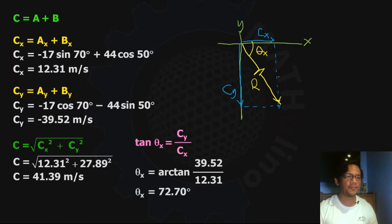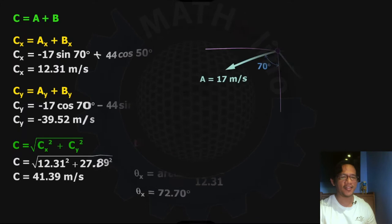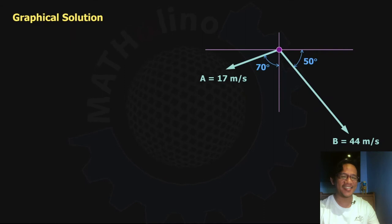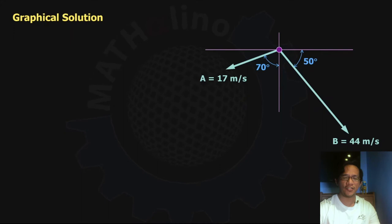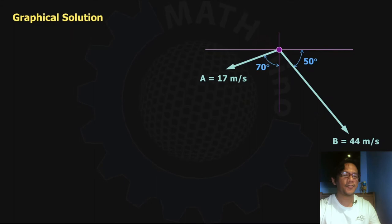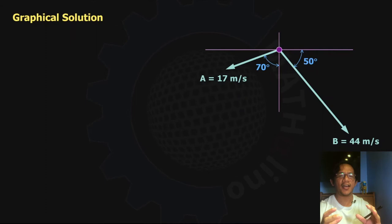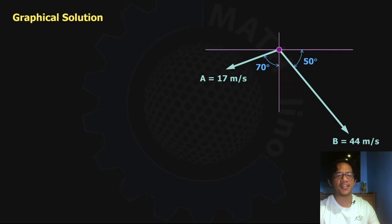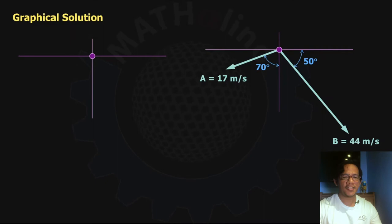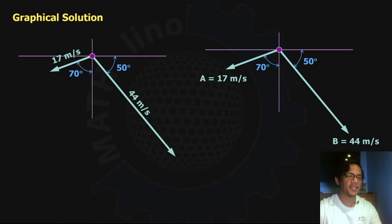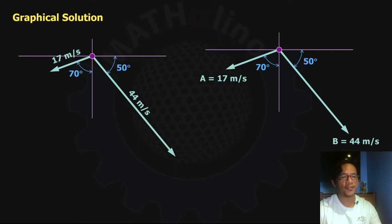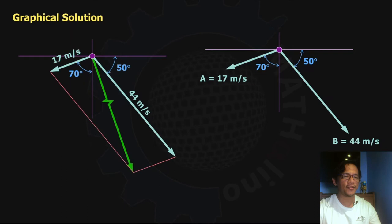Another way to solve this problem is by a graphical solution. What I like about the graphical solution is the drawing. If you are good in geometry — trigonometry in particular — this is very easy to solve. Let us do a little scaling of the figures. This 17 is very short and 44 is very long. We'll start with the 44 meters per second and the 17 meters per second, then apply the parallelogram law to find the resultant.